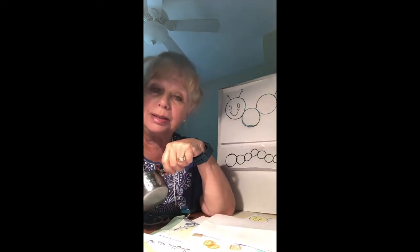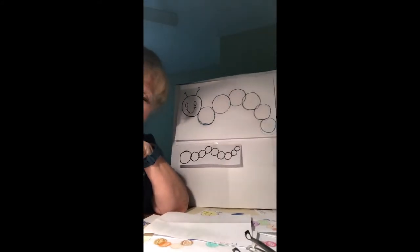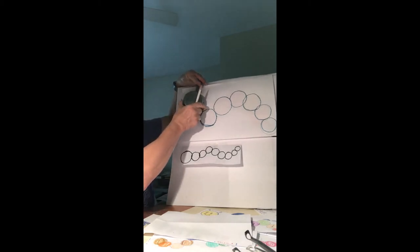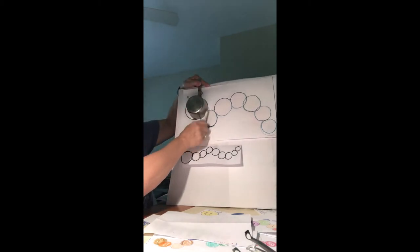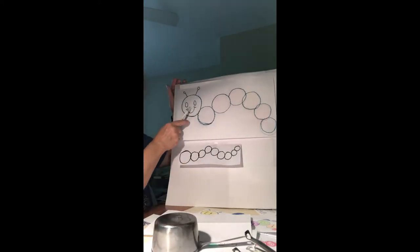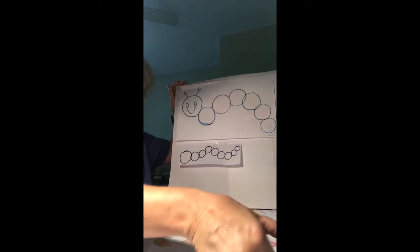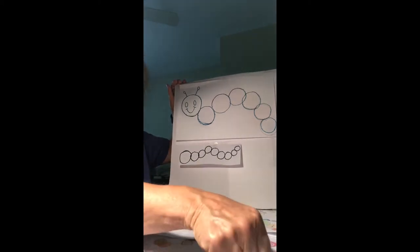The first one I'd like to share with you is a caterpillar. I'm going to turn my video so you can see. Now I took the measuring cup and I traced around it to make a circle with a pencil. The big cup made the caterpillar's head.